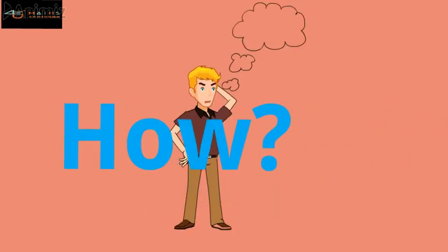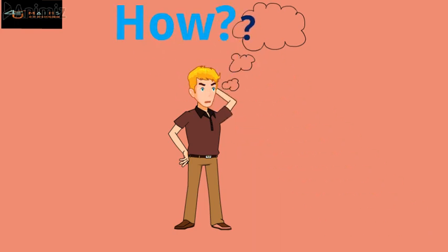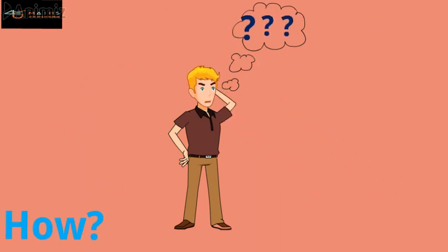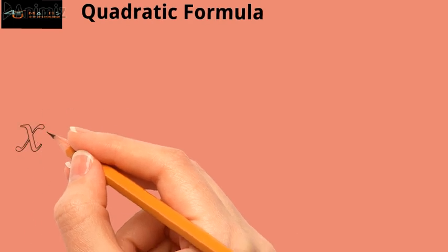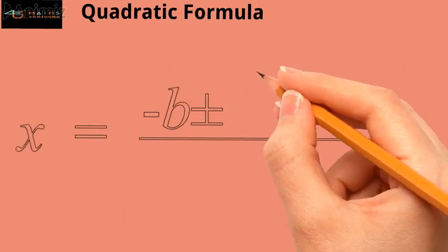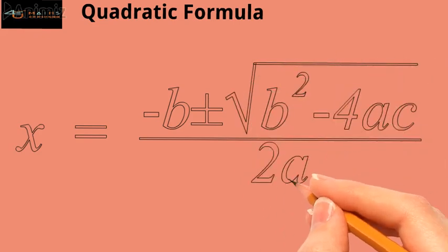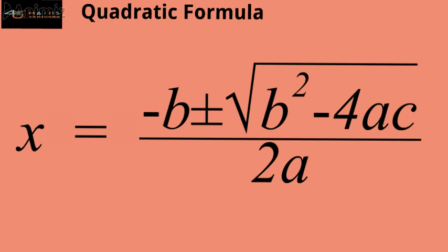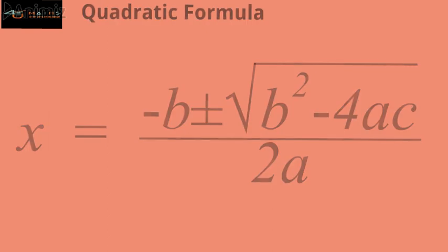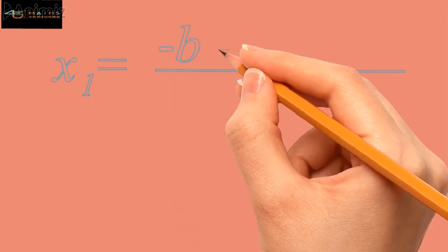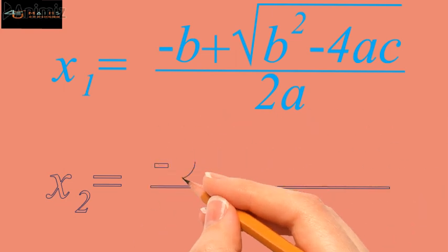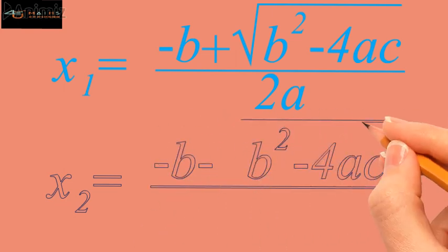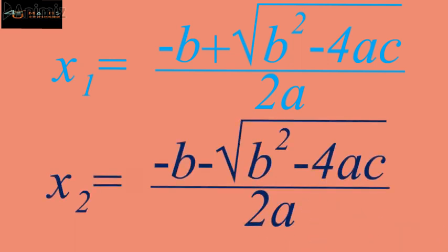The solution of this quadratic equation can be easily obtained by using the well-known formula called the quadratic formula: x equals minus b plus or minus the square root of b squared minus 4ac, all divided by 2a. That is, the two roots are x₁ equals (minus b plus √(b²−4ac)) / 2a, and x₂ equals (minus b minus √(b²−4ac)) / 2a.